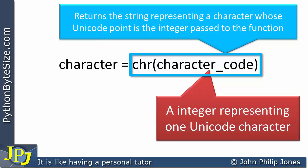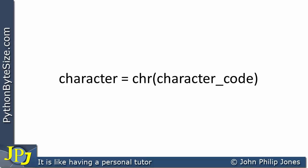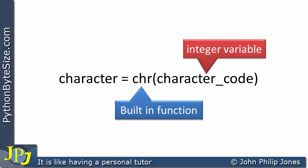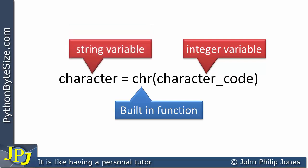What you get out of chr() is a string. Even though that string is only of length one, it is still a string. Python does not have the character type that other programming languages have. So when we get the character back, we assign it to the variable. The integer variable is passed to the built-in chr() function, and what comes back is a string variable — a string of length one, but a string nevertheless.